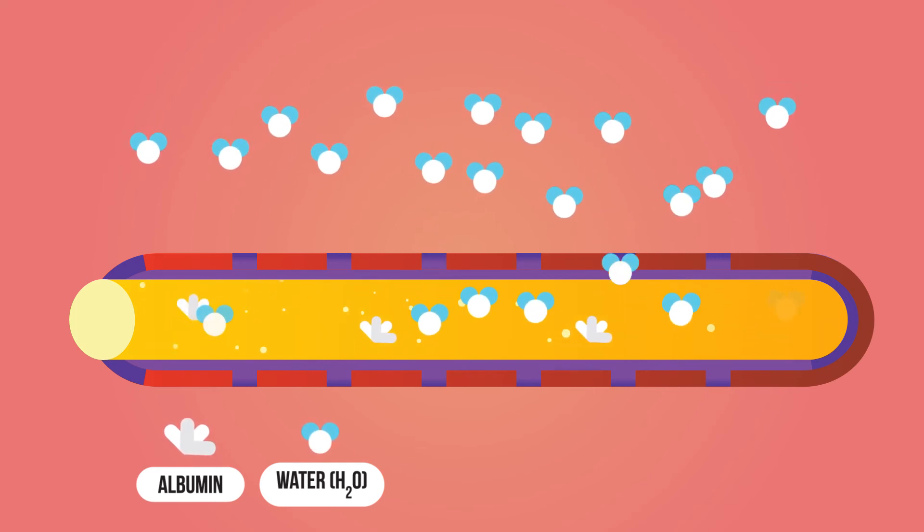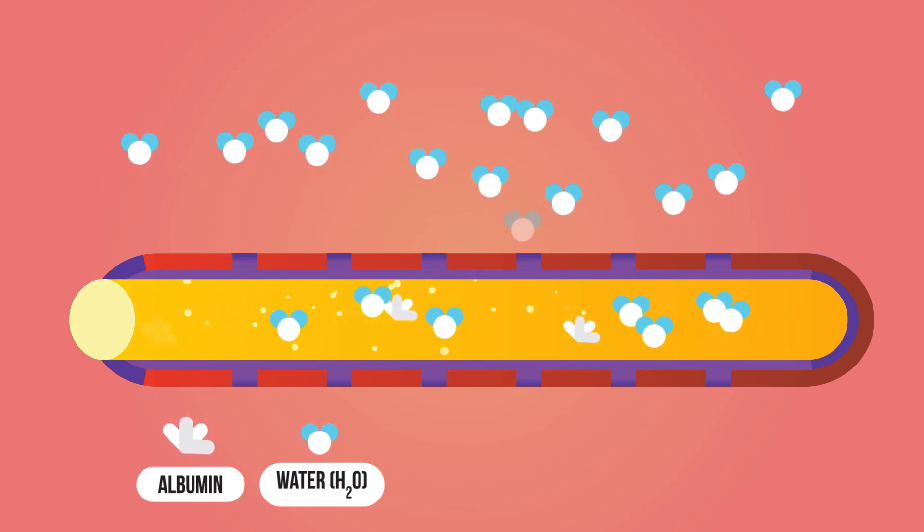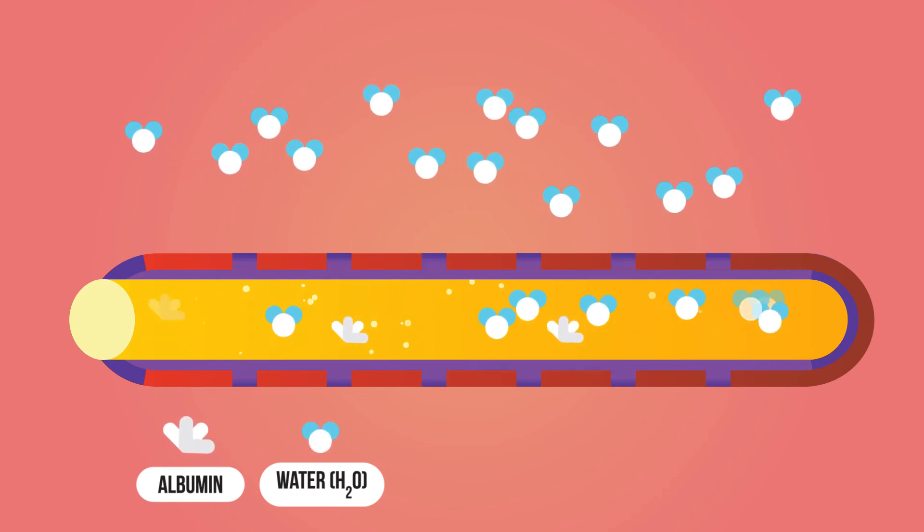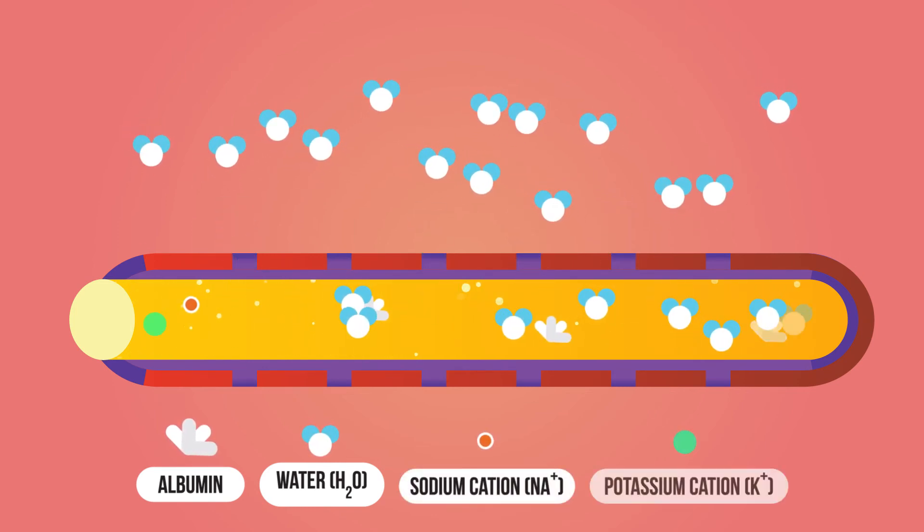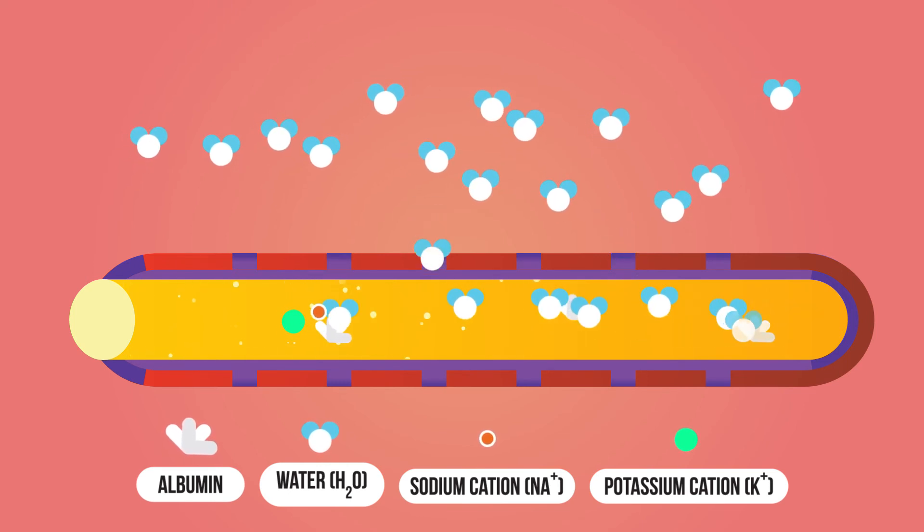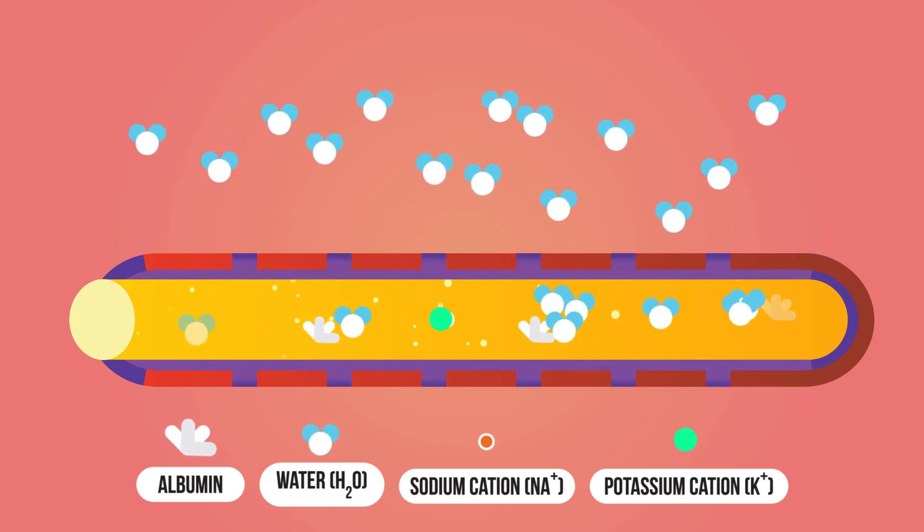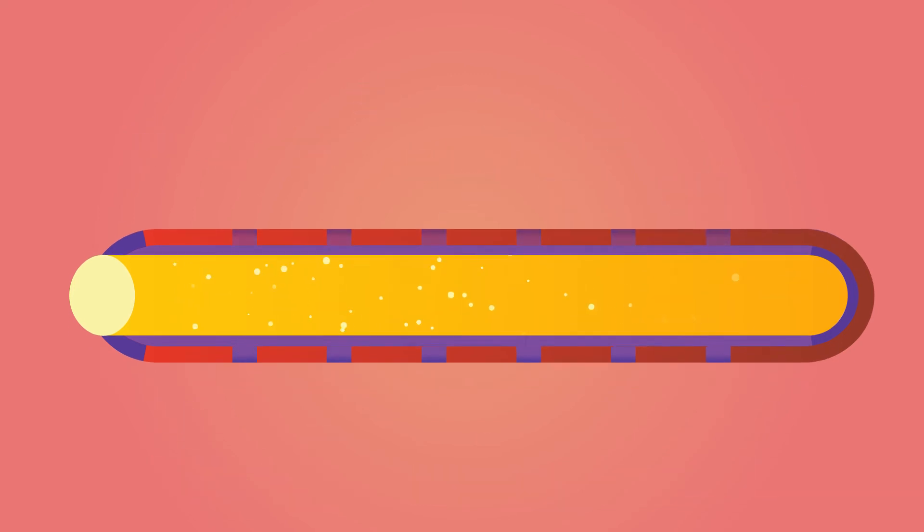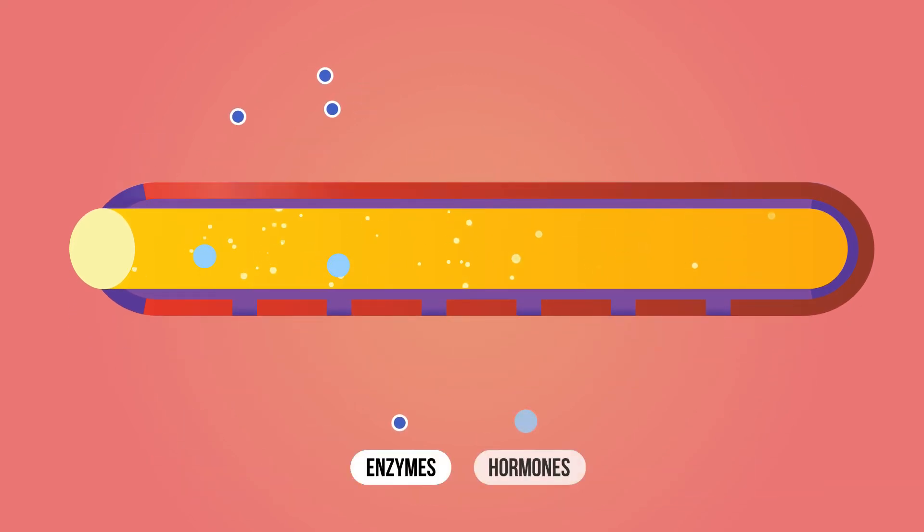As well as 90% water and 7% proteins, plasma also has important salts and electrolytes such as sodium and potassium. These are really important in keeping our nerves firing so they can send messages around the body. Plasma also includes enzymes that catalyze reactions and hormones that regulate body functions.